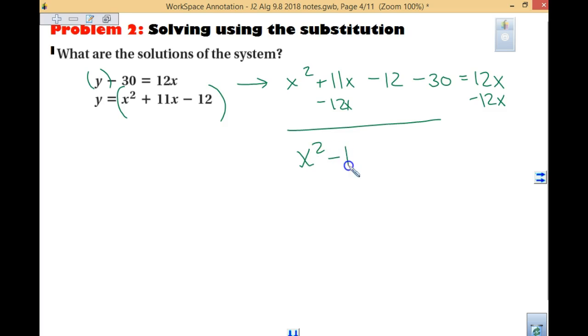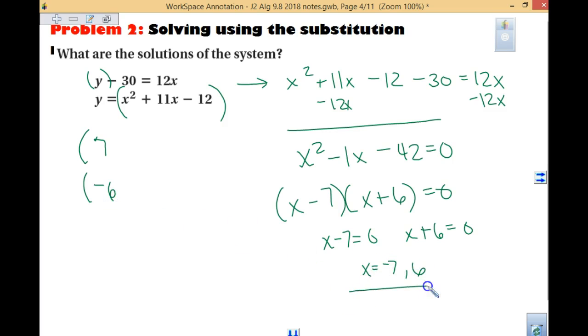You now have to get this equal to 0. If you can't factor or find square roots, you would use the quadratic equation. In this case, we subtract 12x from both sides. I'm left with x squared minus 1x minus 42 equals 0. I can easily factor. My two factors are x minus 7 and x plus 6 equals 0. Our two solutions we've just found is x is 7 and x is negative 6. We have only found the x value.